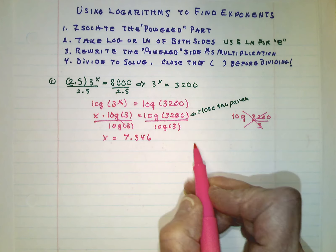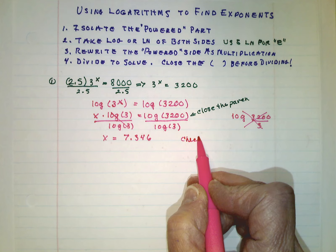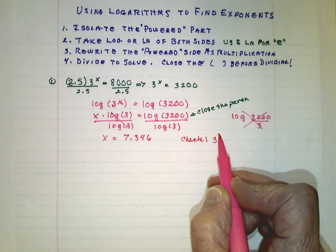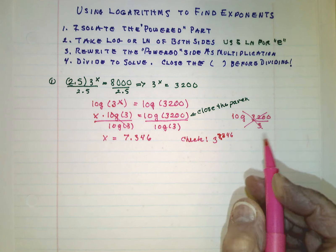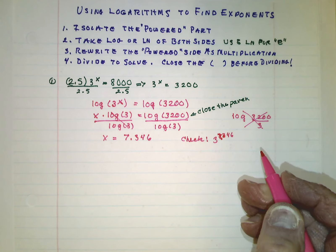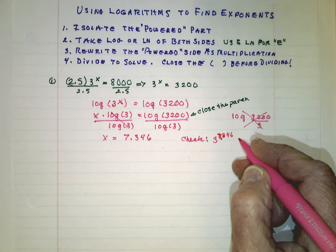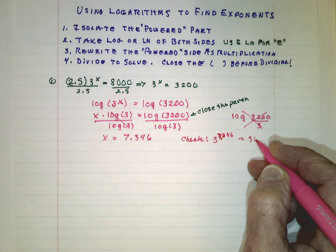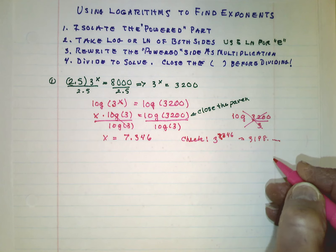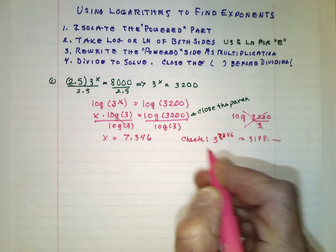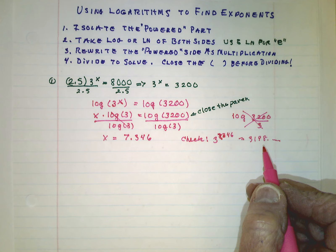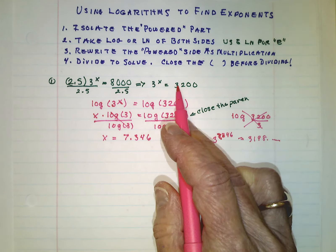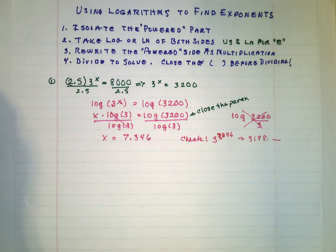We could check by raising 3 to the 7.346 power. And it doesn't come out evenly. It comes out something like 3,198 point stuff. That's because we rounded off our answer. So it's not going to be perfect when we try to check it. But it's close enough. And we know we were on the right track here.